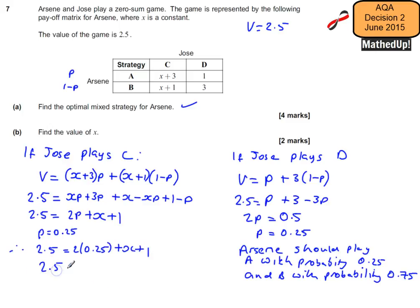So 2.5 is going to be equal to 0.5 plus 1, which is 1.5 plus x. And that tells us that x has to be equal to 1, and that's part B.